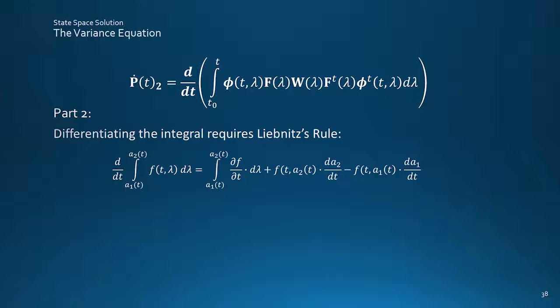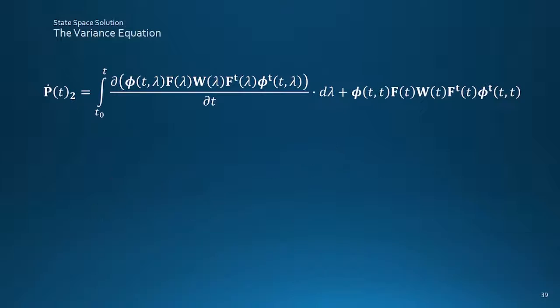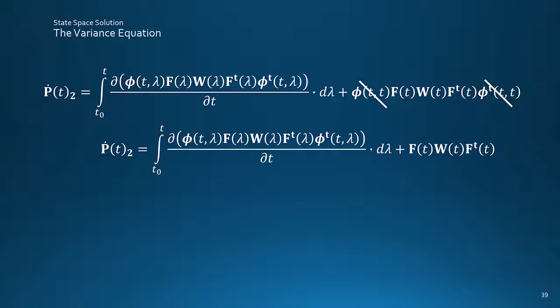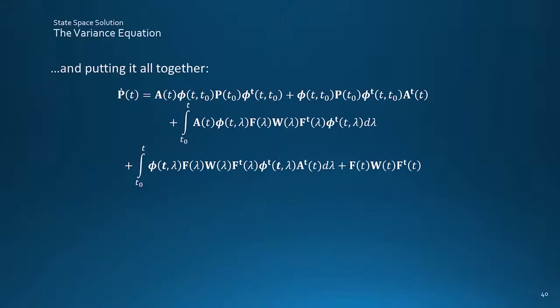Hmm, well, we've started, so let's hack on. The STM here, from T to T, is simply the identity matrix for nothing changing. There's still a derivative with respect to time to take inside the integral, which acts on the phi terms. And using the product rule, along with the derivative of phi as A times phi, gives this. And putting it all together gives this lot. Yuck.